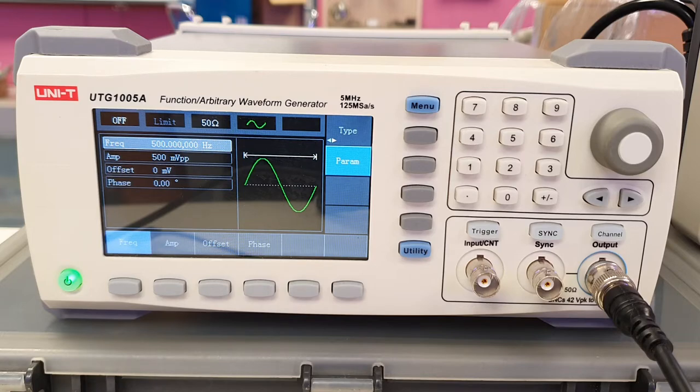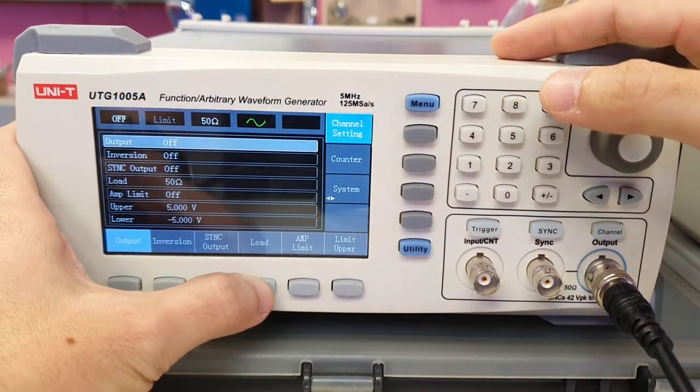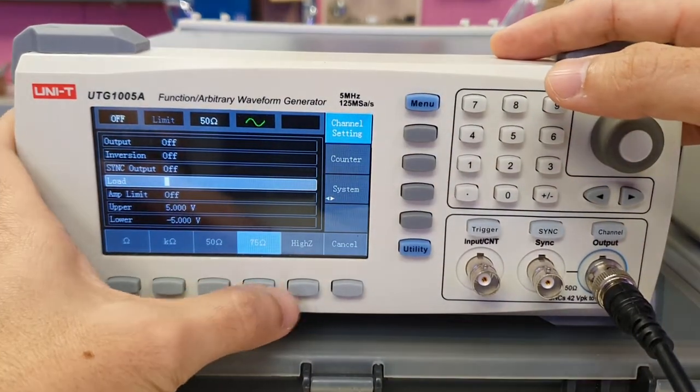To set the function generator termination to high impedance, press Utility. Then under Channel Setting, choose Load, and finally choose high Z.